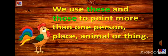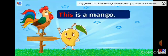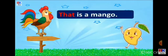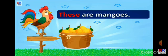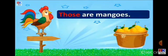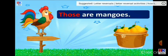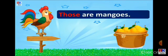Now four more examples. 'This is a mango' — the mango is near. If the mango goes far away, you write 'That is a mango', because it is one single thing and far away. When things are many and near, we write 'These are mangoes'. And when many mangoes are far away from us, we say 'Those are mangoes'. Understood the use of 'these' and 'those'.